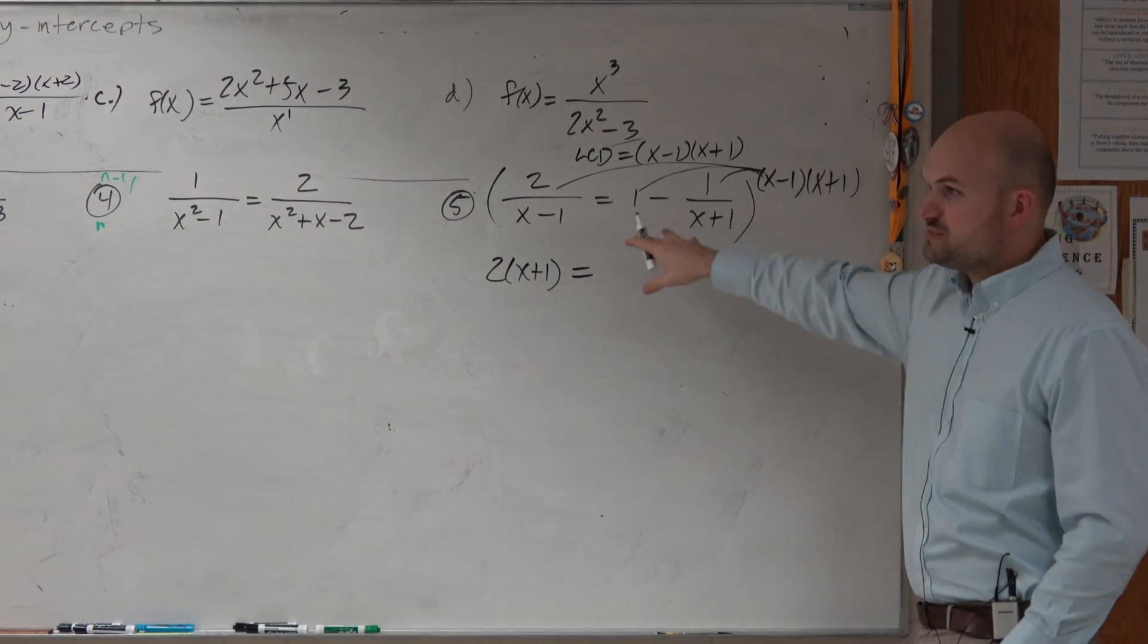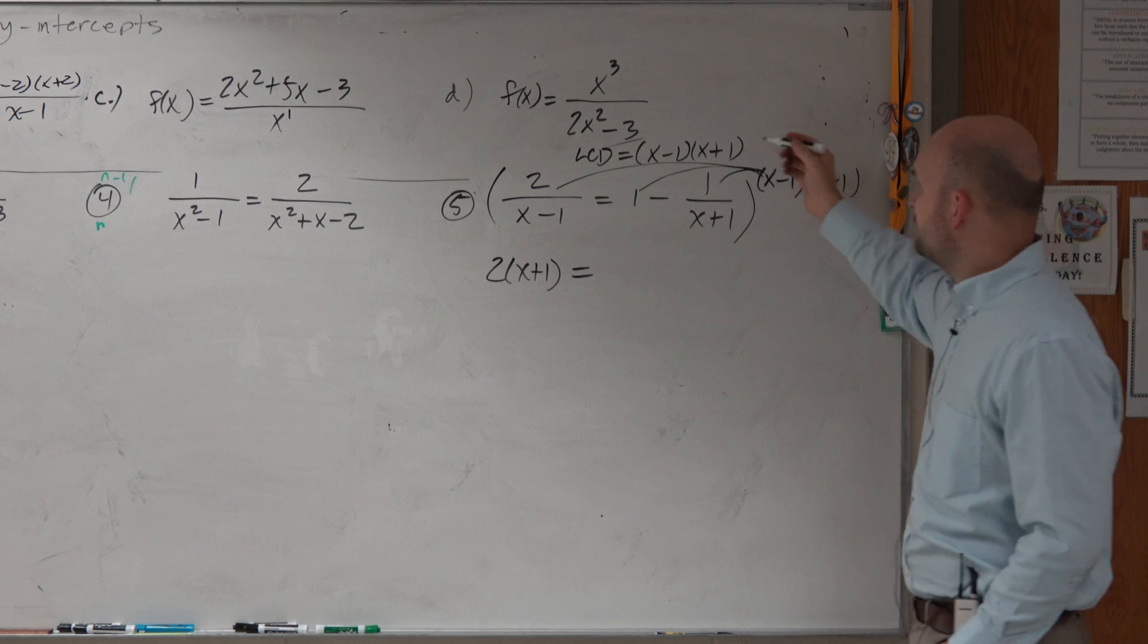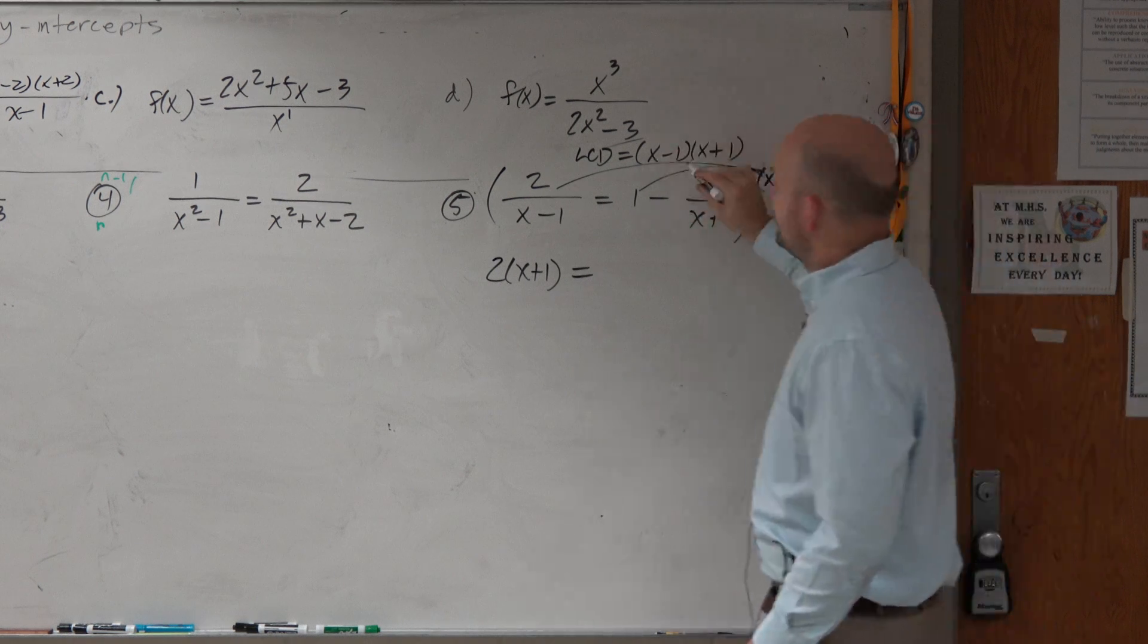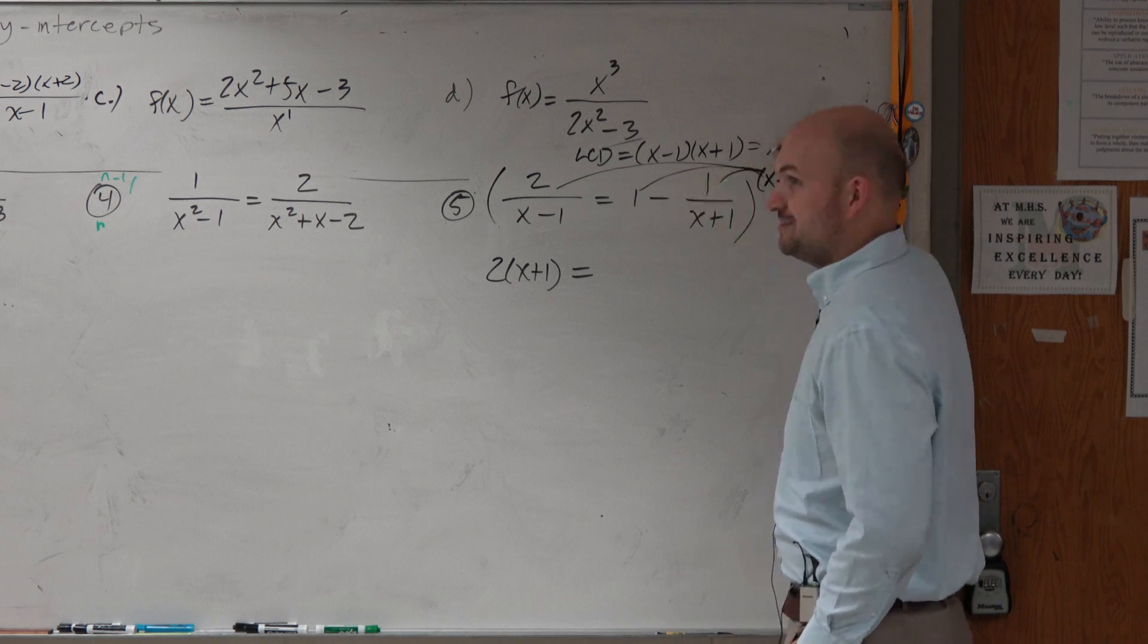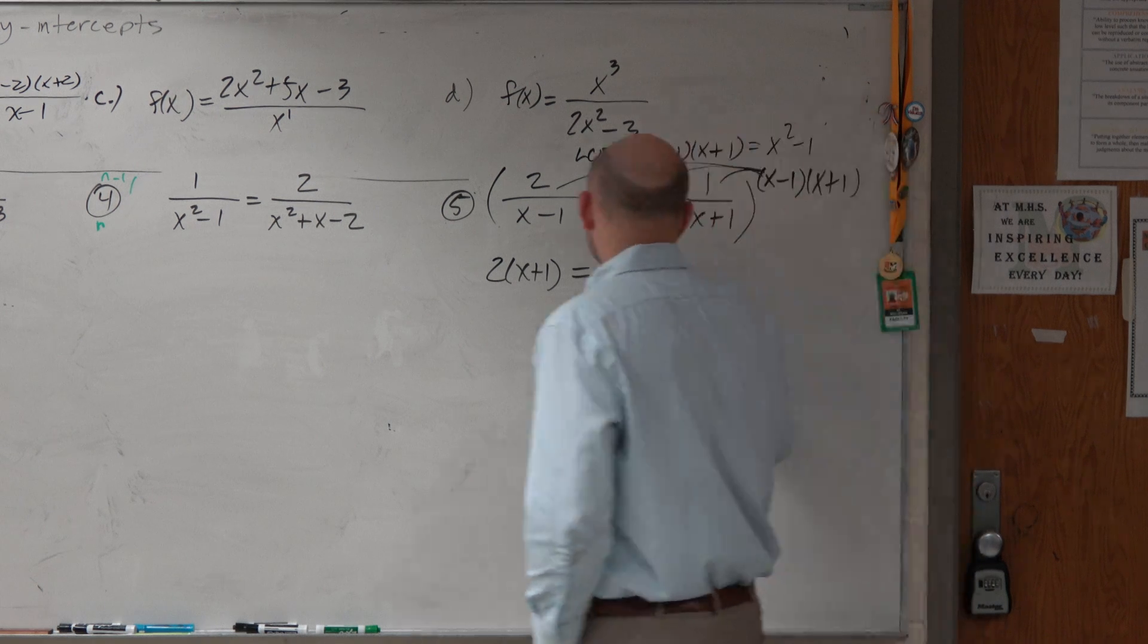Here, I'm multiplying this times 1. Well, that's just going to be the product. So why don't we simplify this? Because x minus 1 times x plus 1 is x squared minus 1. Difference of two squares.